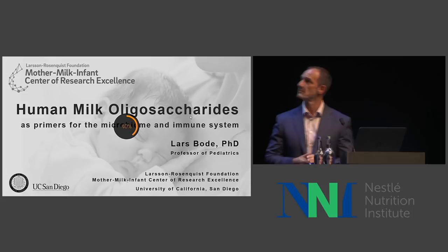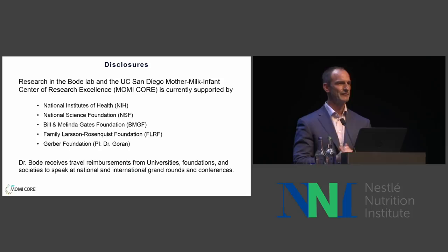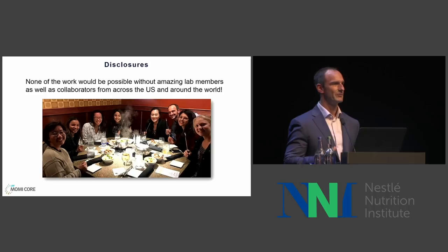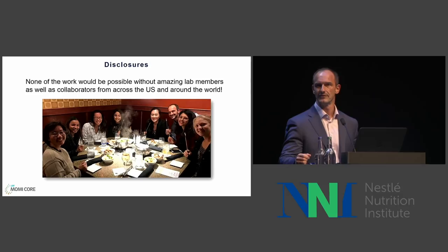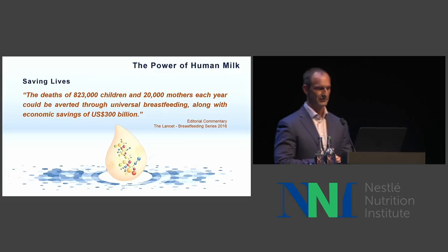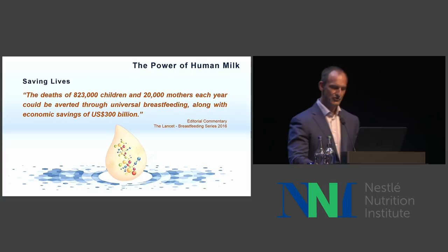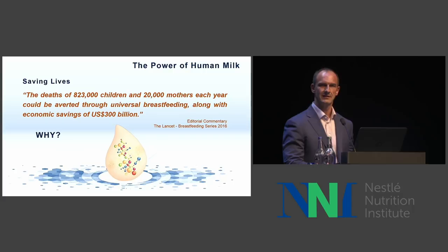Thank you very much for the introduction. HMO man sounds better than what my lab calls me, which is sugar daddy. So we're talking about human milk oligosaccharides. A couple of disclosures on funding, and all of this work would not be possible without the people in my lab and collaborators in the U.S. and around the world. I'd like to start by putting this into perspective with a statement from the Lancet Breastfeeding Series editorial 2016: the death of 823,000 infants and 20,000 mothers each year could be averted through universal breastfeeding, along with economic savings of $300 billion U.S. dollars. We really try to answer the question why — what's behind that statement, and how does it work on a molecular level?